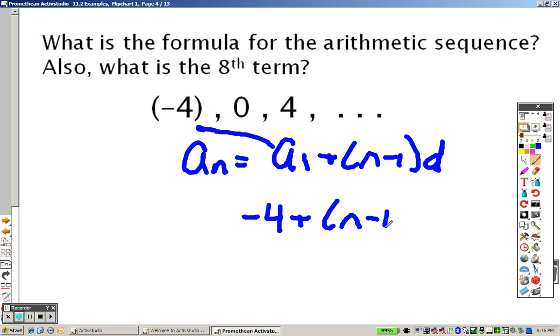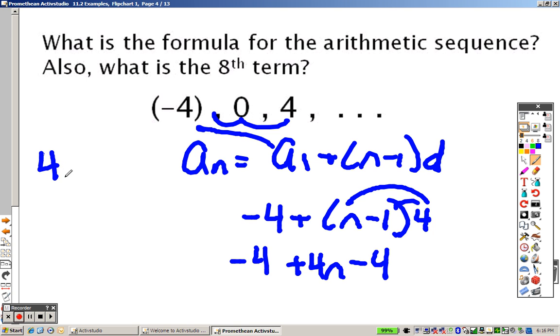plus N minus 1. And what's it going up by every time? It's going up by 4. So I just distribute that through to get negative 4 plus 4N minus 4, and when I combine my like terms, I get 4N minus 8. So to find the eighth term, I plug an 8 in there. So 4 times 8 minus 8 is 32 minus 8, which is 24.